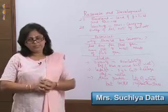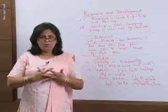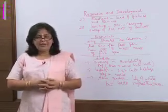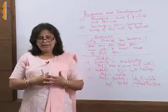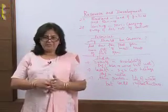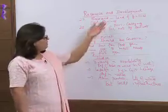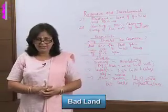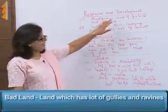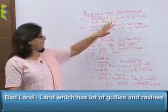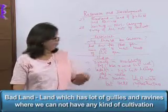In this chapter we discuss not only resources, their kinds and development, but also soil — what it is, the kinds of soil, and the degradation process — how soil becomes less fertile or even barren due to natural and human factors. Bad land, as the name suggests, is land unfit for cultivation or human use — land with lots of gullies and ravines where no cultivation is possible.